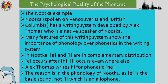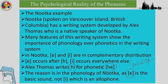The Nutka example: Nutka, spoken on Vancouver Island, British Columbia, has a writing system developed by Alex Thomas, a native speaker. Many features of this writing system show the importance of phonology in writing systems. In Nutka, /a/ and /e/ are in complementary distribution: /a/ occurs after /h/ and /e/ occurs everywhere else. Alex Thomas writes /e/ for /a/, following the rule that /a/ goes to /e/ in the environment of a preceding /h/, with /e/ as the underlying form.